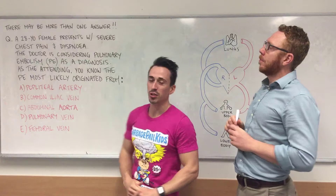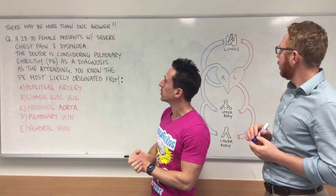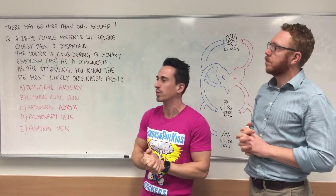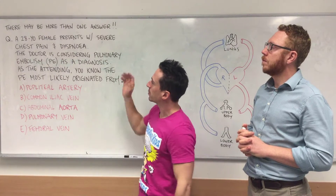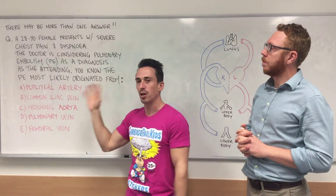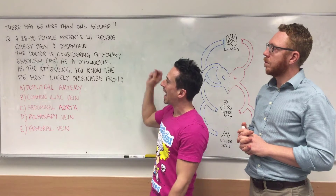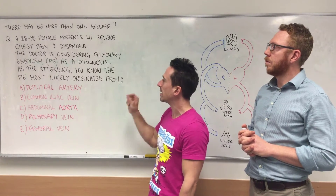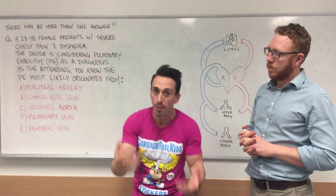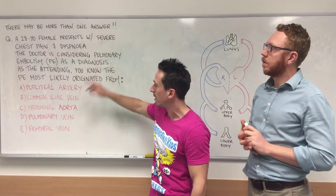What is the question? A 28-year-old female presents with severe chest pain and dyspnea, basically meaning shortness of breath. The doctor is considering a pulmonary embolism as a diagnosis. We'll need to know that the PE is most likely originating from — and note that there may be more than one answer.